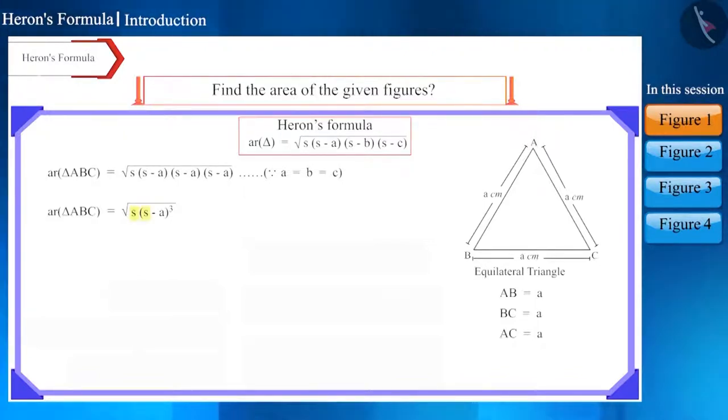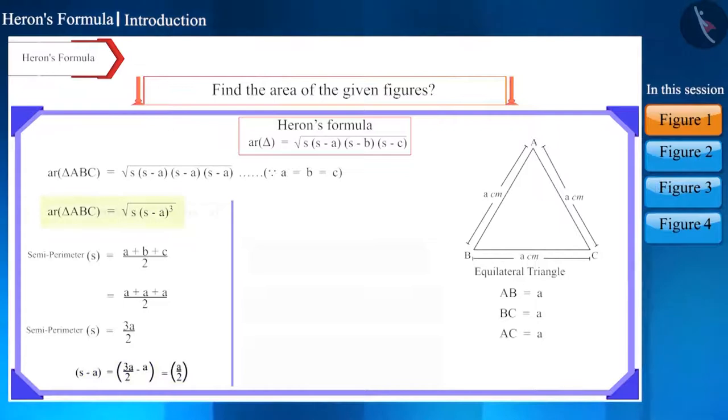Now we will determine the value of semi-perimeter, that is S. Semi-perimeter will be equal to (A plus B plus C) divided by 2, which will be equal to (A plus A plus A) divided by 2, or we can say 3A divided by 2. We have obtained the value of S. Now we will find the value of (S minus A) and put it in the formula. S minus A is equal to A divided by 2.